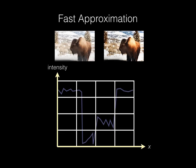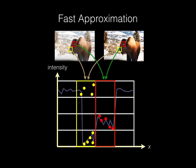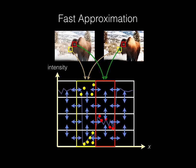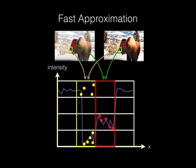Let's look again at the problem we're trying to solve. At the top is the input-output pair, and below is the corresponding bilateral grid. Since the input image only covers a limited range of intensities, we only have input-output data in a sparse set of grid cells. These are the data terms in the optimization from the last slide. The regularizer simply adds soft constraints that encourage neighboring cells to be similar.